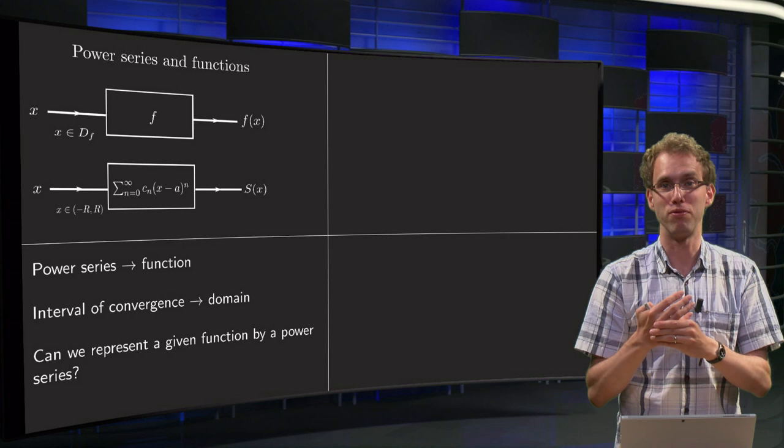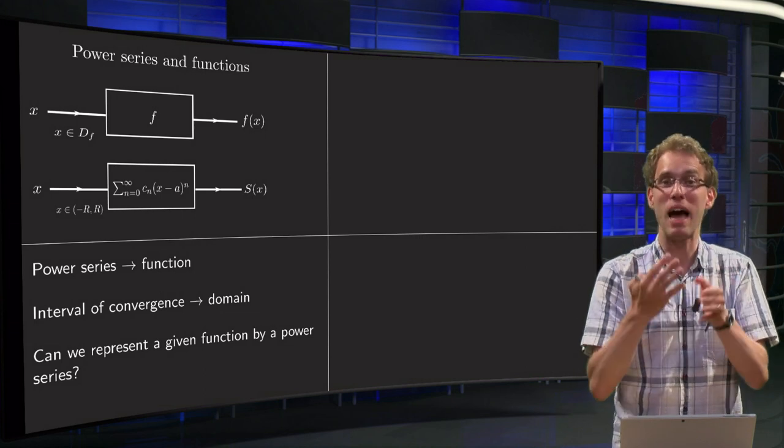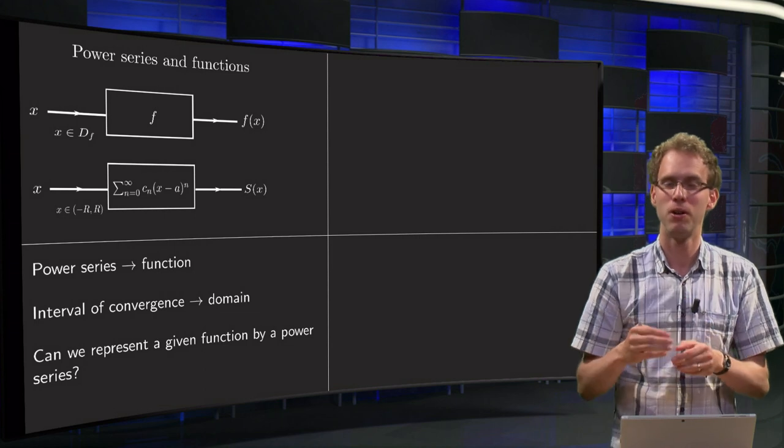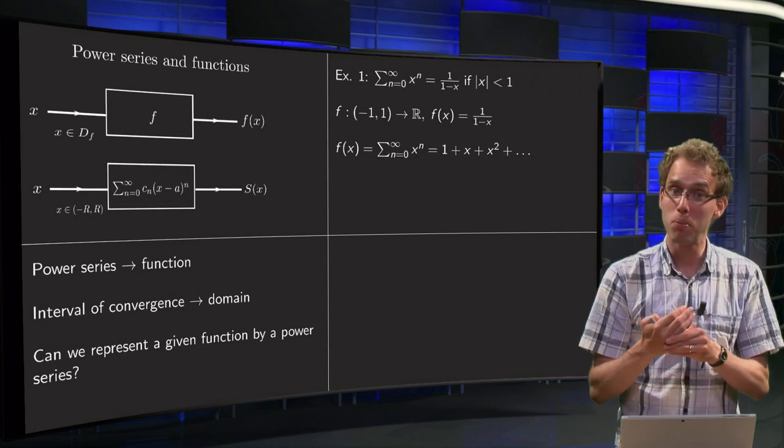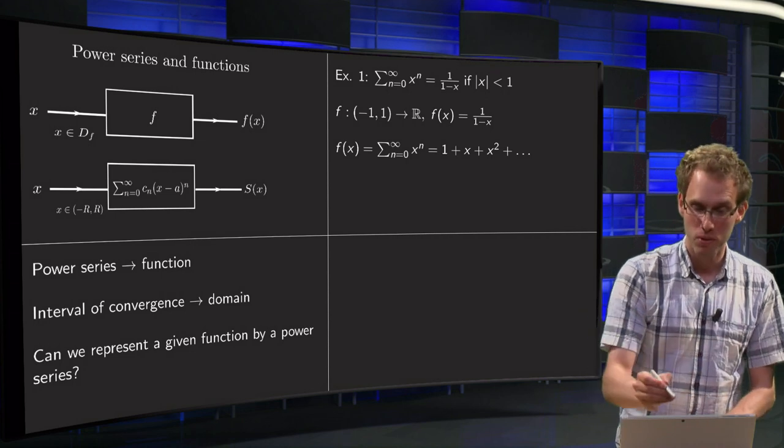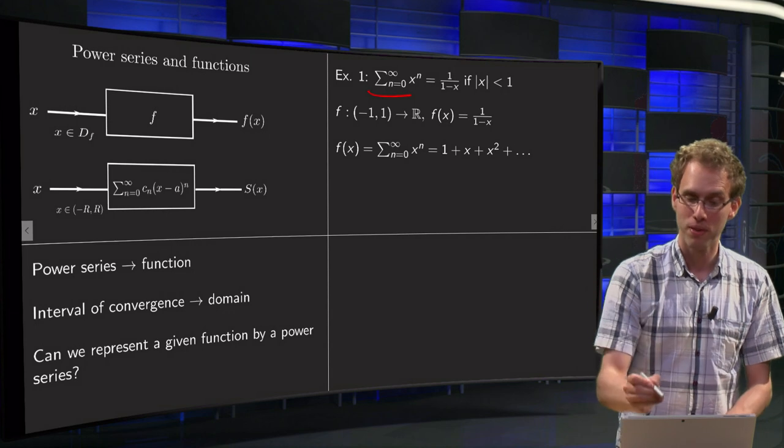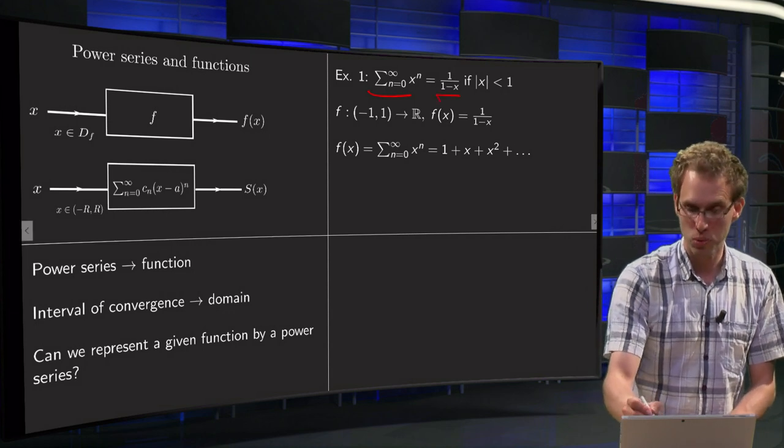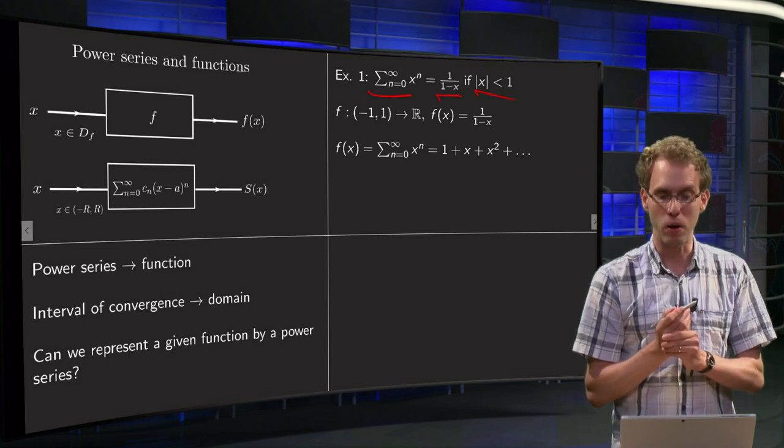Suppose you have some function, can we find a power series which is exactly the same as what the function does? Well, that seems a difficult question. We have seen an example already, because we know the geometric series: the sum from n=0 to infinity of x to the power n, and we know that it equals 1 over (1 minus x), if the absolute value of x is smaller than 1.